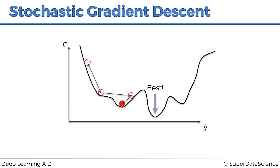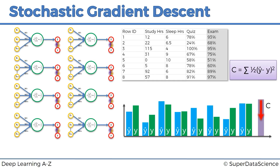So what do we do in this case? The answer is stochastic gradient descent, and it turns out stochastic gradient descent doesn't require the cost function to be convex. Let's have a look at the two differences between normal gradient descent and stochastic gradient descent.